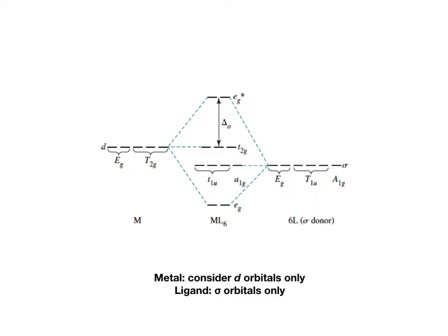Symmetry-matching pairs interact to form bonding and anti-bonding orbitals. Orbitals without symmetry-matching pairs become non-bonding. In the resulting MO diagram for the ML6 complex, there are two bonding eg orbitals and associated anti-bonding eg* levels at very high energy. In the middle are non-bonding orbitals: the ligand's t1u and a1g become non-bonding because they find no symmetry matches on the metal side, and the metal's t2g becomes non-bonding because no ligand orbitals have t2g symmetry.